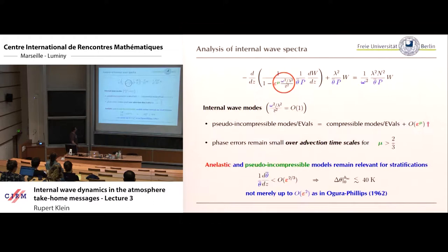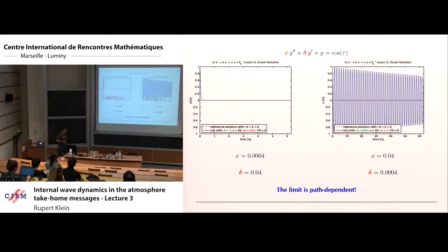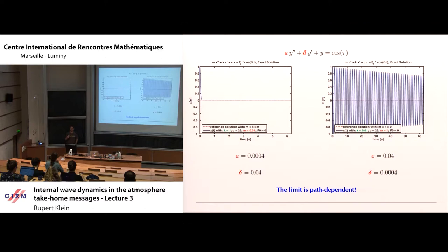I argued how we are trying to move towards rigorously proving these things rather than only making formal asymptotic arguments, as important as those are for understanding the subject. The internal wave–sound wave–advection system is one type where the fast process is oscillatory. The internal waves and sound waves are highly oscillatory, similar to what was discussed this morning. That's one type of multi-scale problem that can arise when epsilon goes to zero.